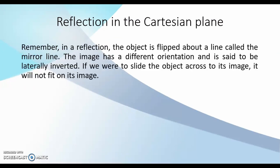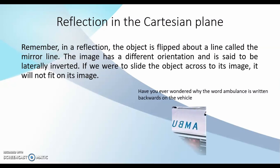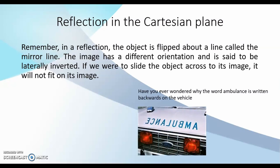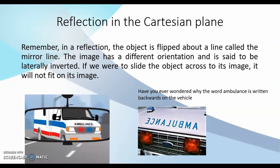Reflection in the Cartesian plane. Remember, in a reflection, the object is flipped about a line called the mirror line. The image has a different orientation and it is said to be laterally inverted. If we were to slide the object across to its image, it will not fit on its image. Have you ever wondered why the word ambulance is written backwards on the vehicle? It is because when you look into your rear view mirror, the image ambulance is going to appear correctly written. Your object which was written laterally inverted is now going to be written correctly when you see it in the mirror.